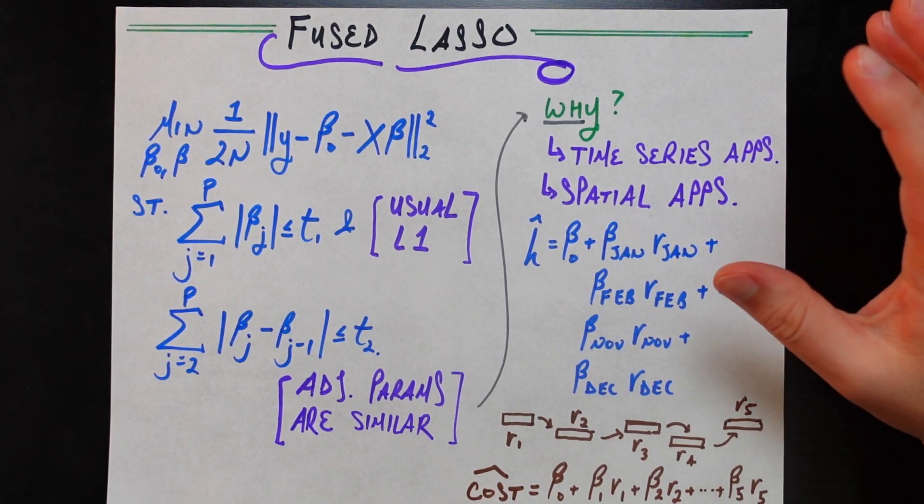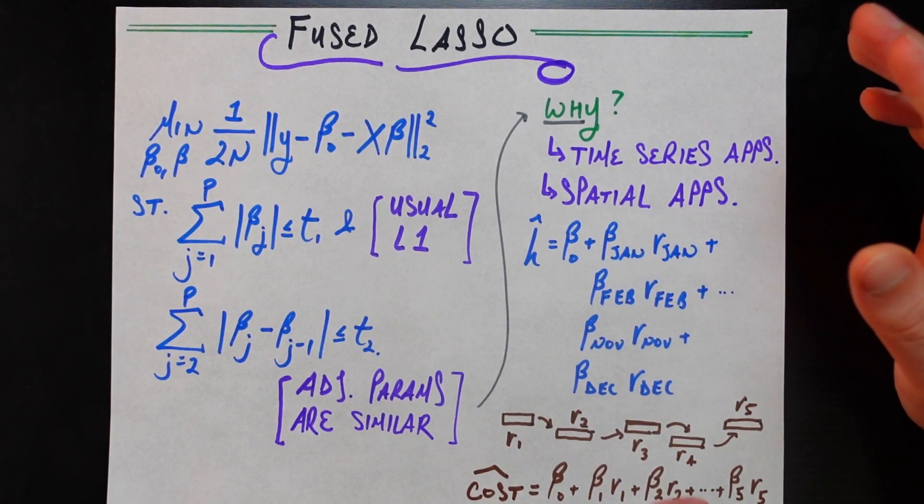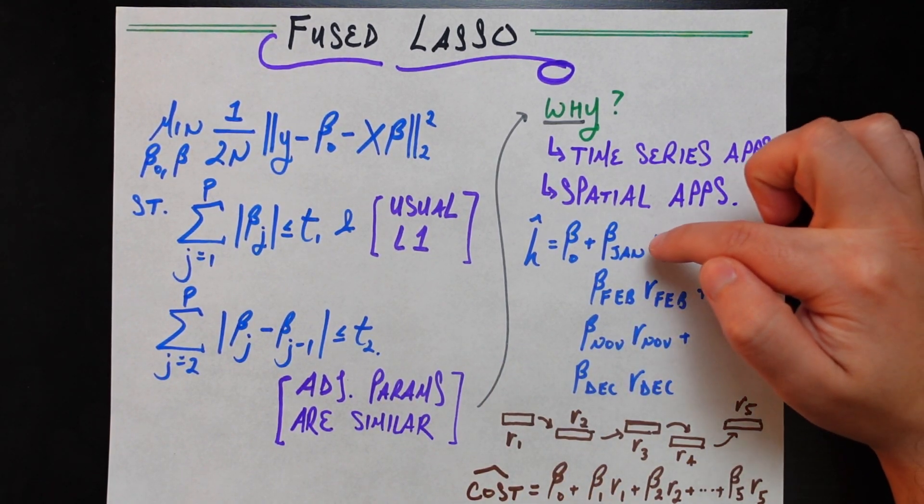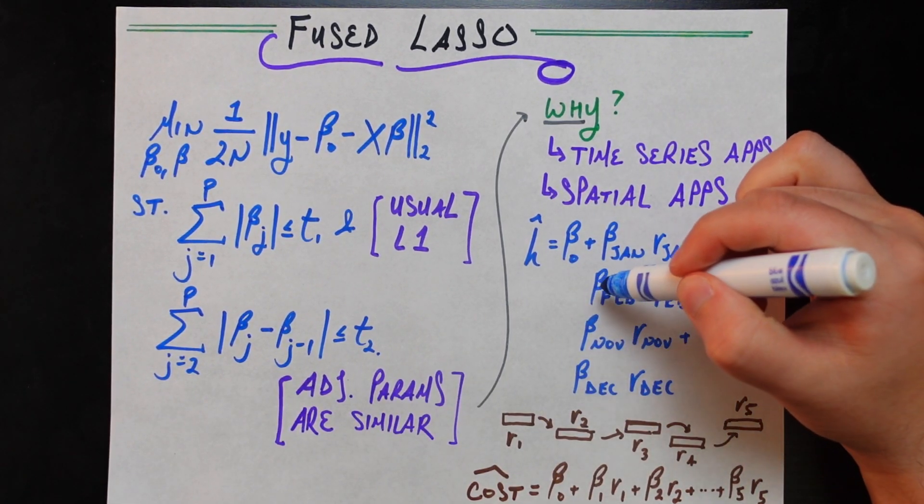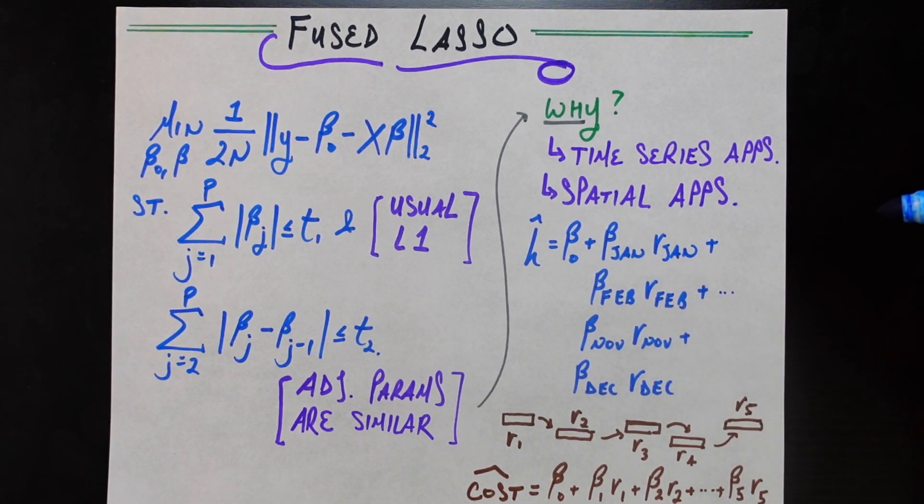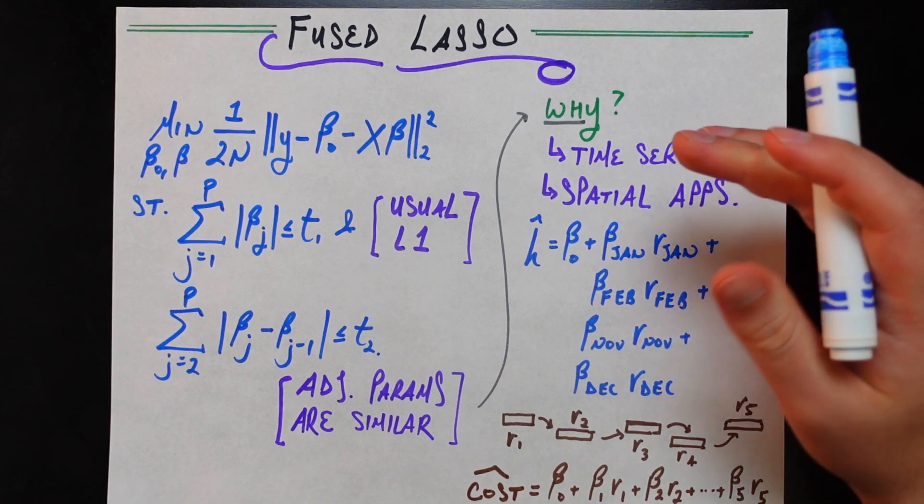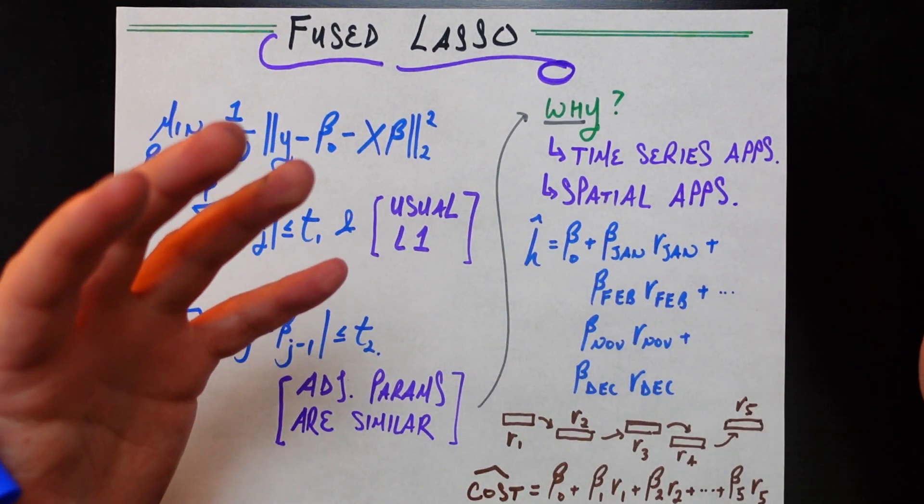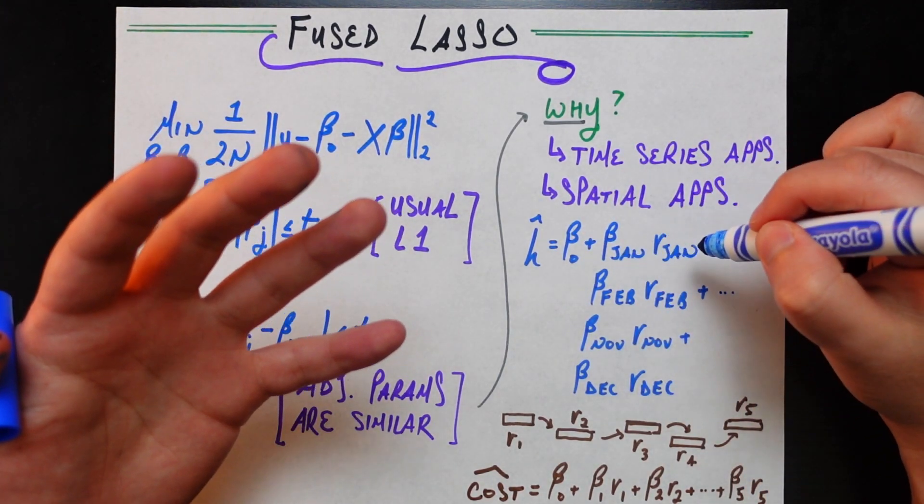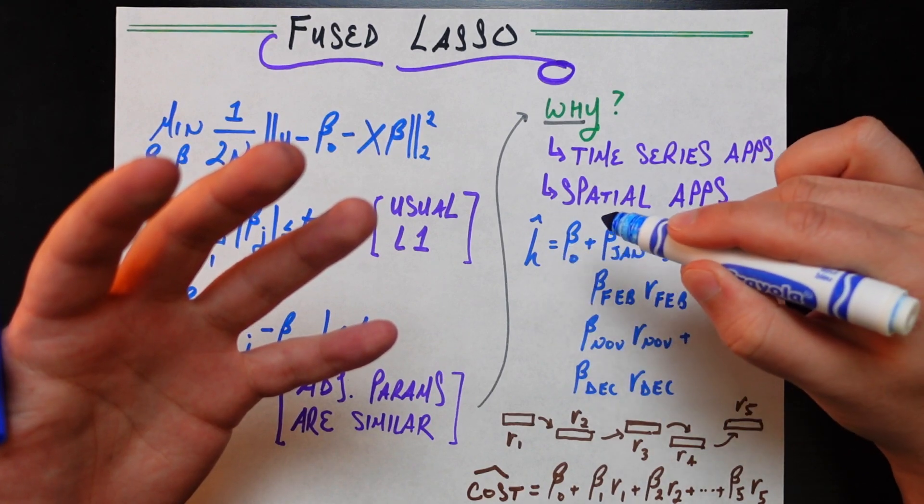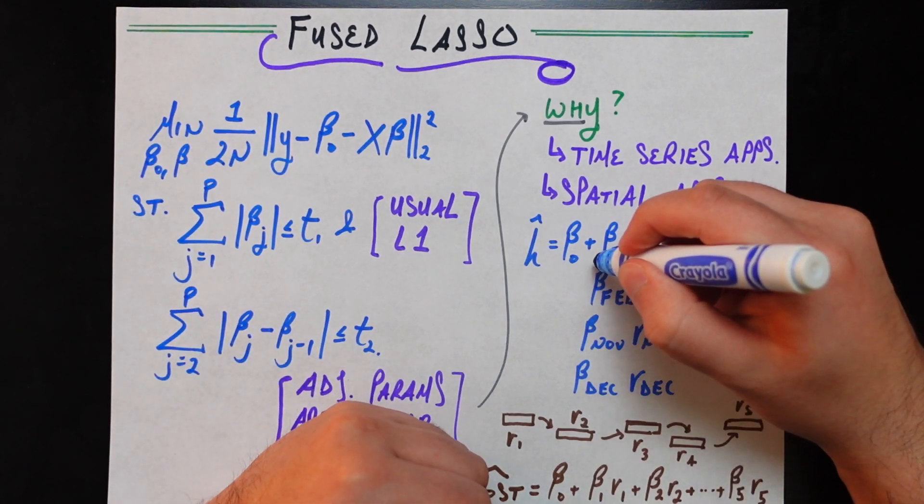Now, this may seem obvious, but let's go into the definition of what these betas mean when you're doing a linear problem. Beta January is going to be the coefficient or the effect that the rainfall in January is going to have on the estimated price of the house. Similarly, beta February is going to be the estimated effect that the rainfall in February would have on the price of the house. Now, January and February, temporally, are very close to each other. Those months are right next to each other. And so, what I would expect, an expectation I would have, is that the effect of the rainfall in January on the price of the house and the effect from the rainfall level in February on the price of the house should be kind of similar to each other.